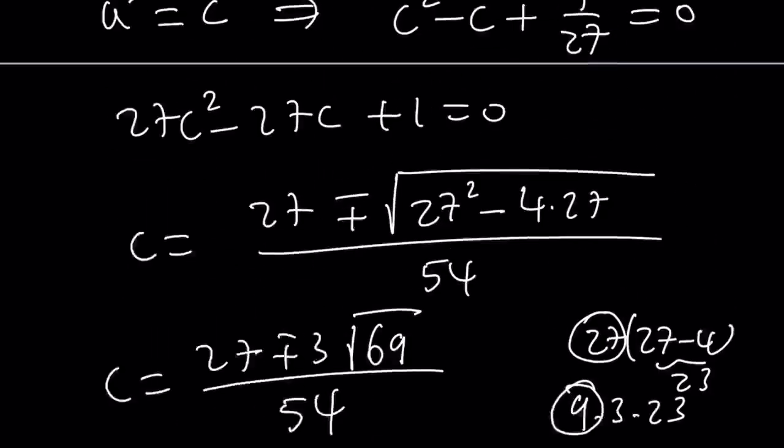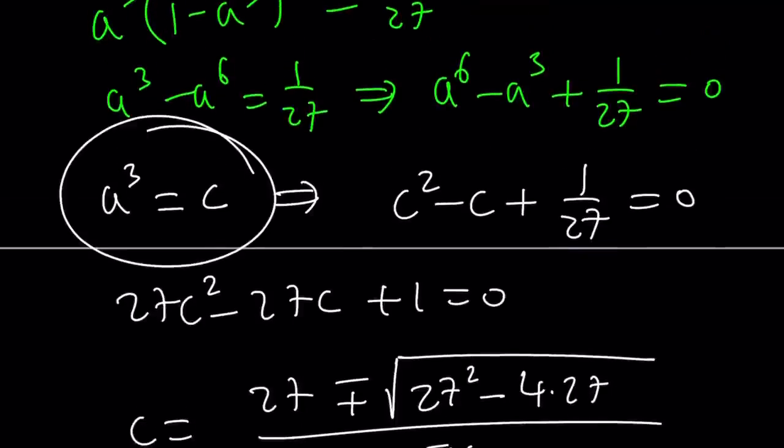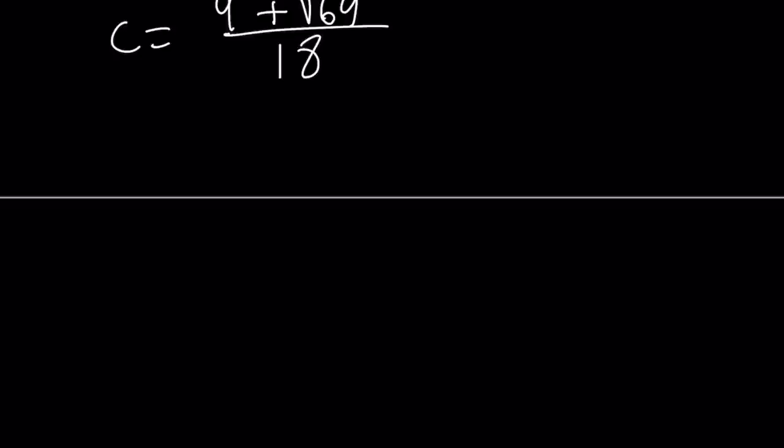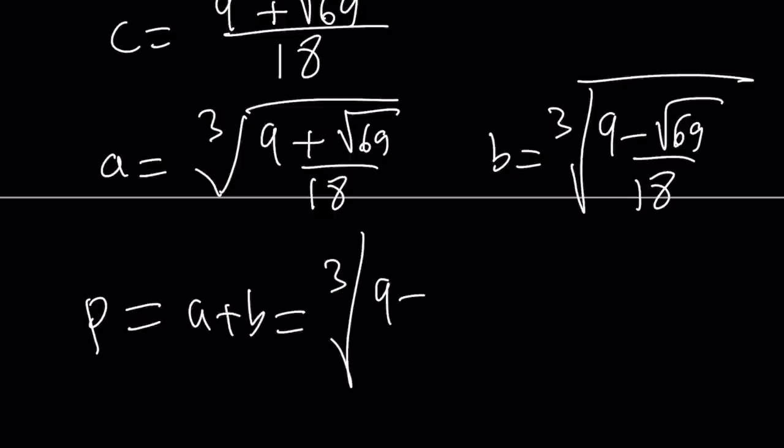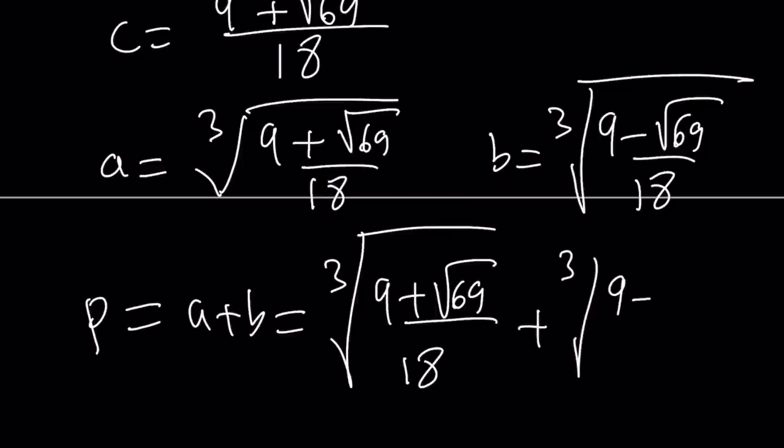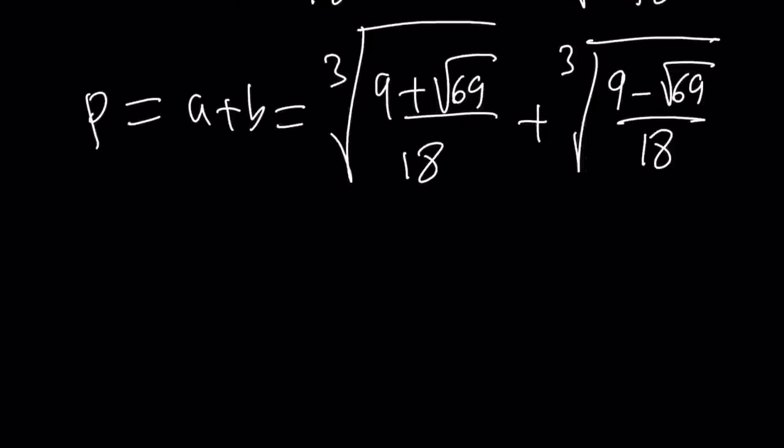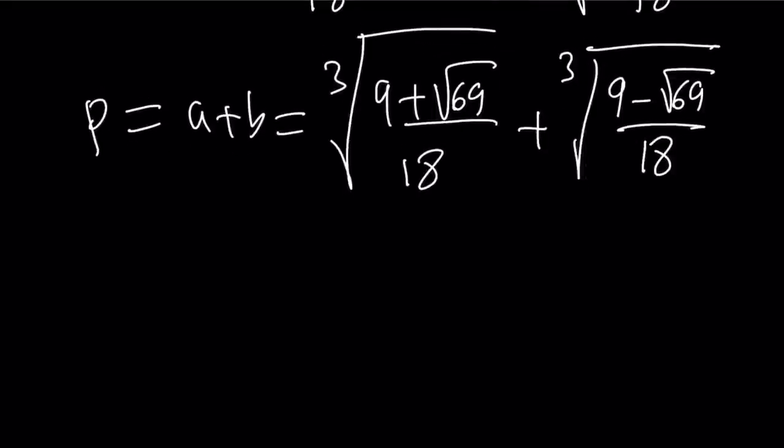This is the value of c. But remember, a cubed is c. So a is going to be the cube root. But there are two cube roots because the other one is going to be b. So a can be written as cube root of this. And b can be written as the cube root of the conjugate. And guess what? P is going to be a plus b, which is the cube root of 9 plus the square root of 69 over 18, plus the cube root of 9 minus the square root of 69 over 18. And guess what? That's going to give us the plastic ratio.